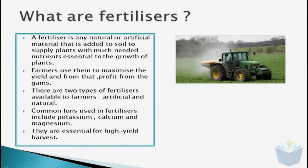Hi and welcome to my third video in the series about energy and ecosystems. Today, we are going to be looking at different types of fertilizers. Fertilizers can come in two forms: they can either be natural or artificial. Natural means made by organisms and artificial means made by another process.